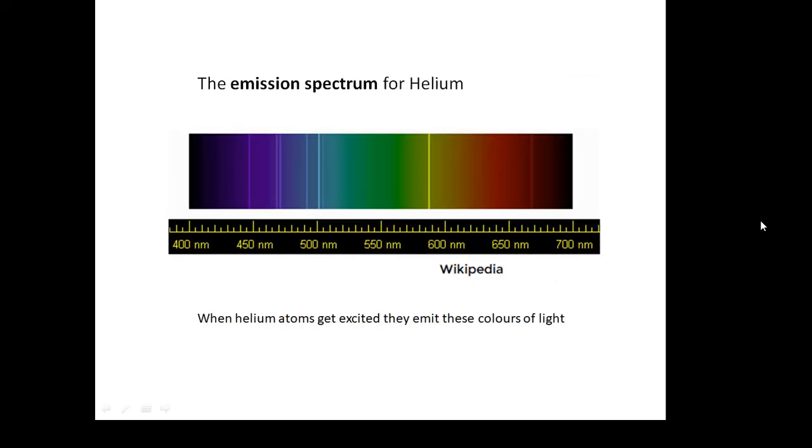For example, this is what we call the emission spectrum for helium. This is basically the colours of light that helium atoms give off when they get excited. And all helium atoms give off the same colours. This is the emission spectrum for helium.